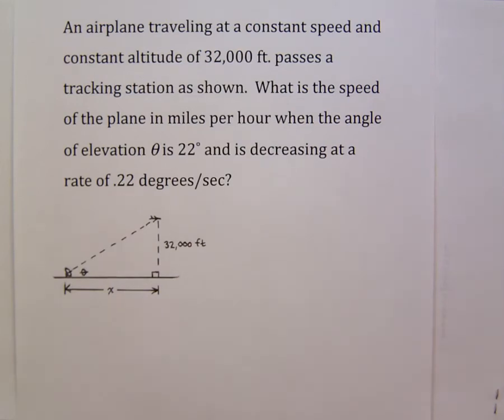In this video we will solve the following related rates problem. An airplane traveling at constant speed and constant altitude of 32,000 feet passes a tracking station as shown in the diagram.